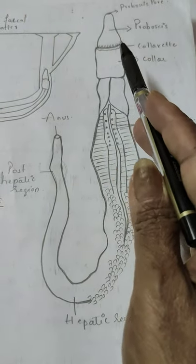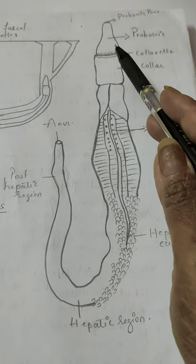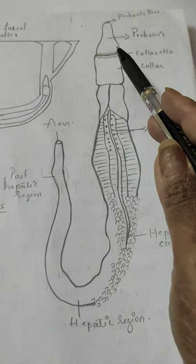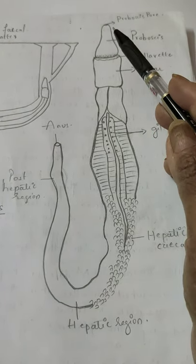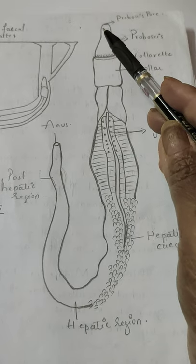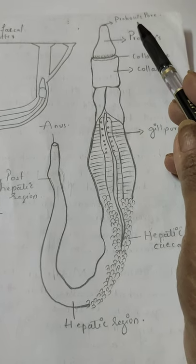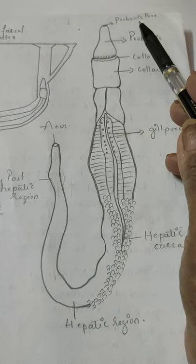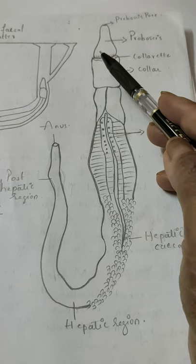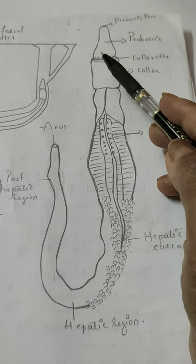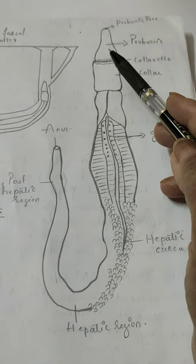Balanoglossus has a body which is worm-like and is divisible into three parts. The first part is known as the proboscis — it is a conical or triangular structure that opens to the outside by means of the proboscis pore, and has inside it a coelom called the proboscis space.